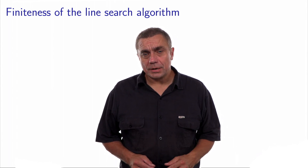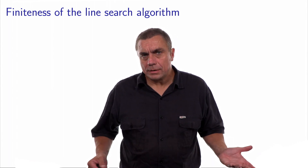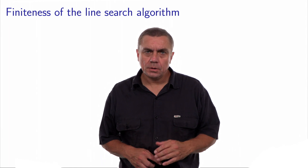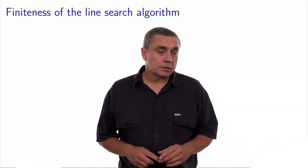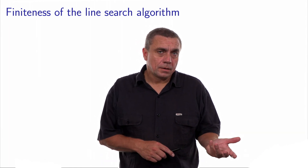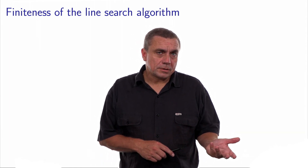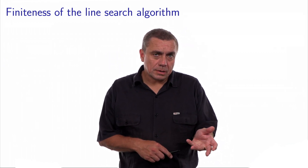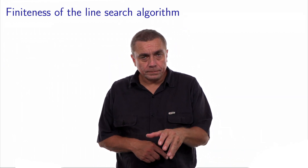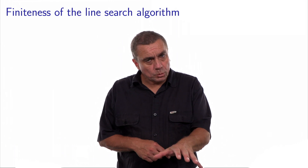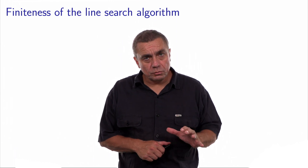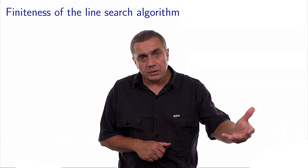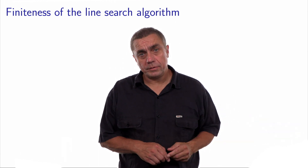The inexact line search algorithm is quite simple. It works with trials and errors. It starts with a candidate step, and if the step is too long, it makes it shorter. If the step is too short, it makes it longer. What we would like to do in this video is to make sure that this process will finish in a finite number of iterations.